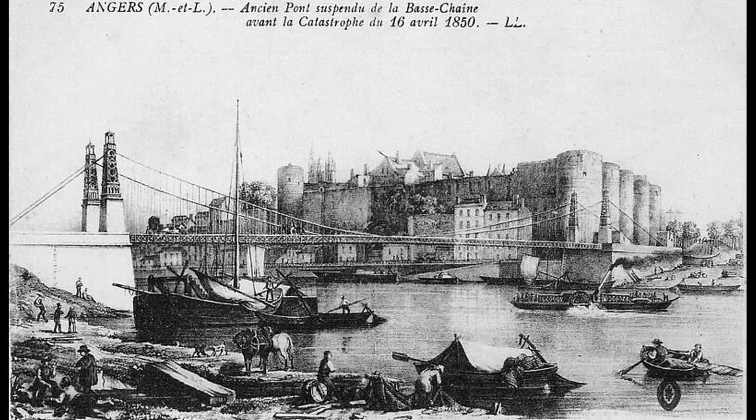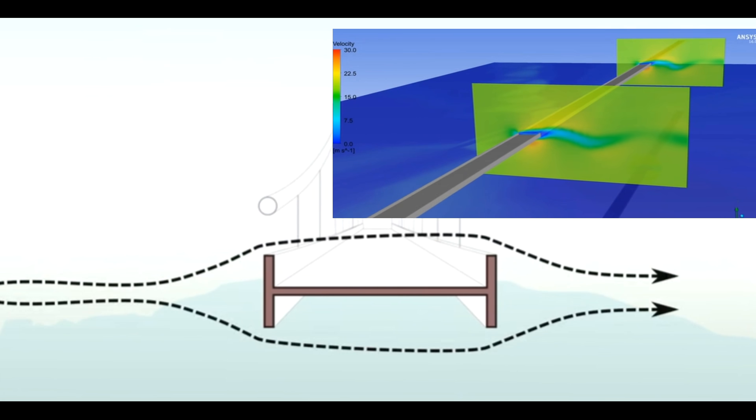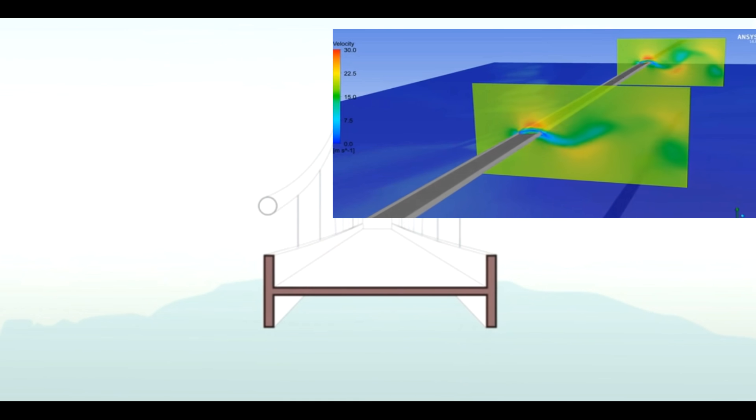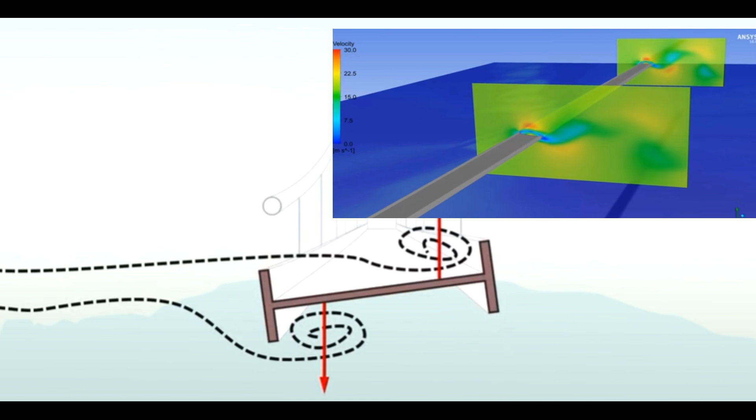The other bridges collapsed due to many factors other than resonance. For example, the Tacoma Bridge collapsed mainly because of aeroelastic flutter, which is an unstable self-excited structural oscillation at a definite frequency where energy is extracted from the airstream by the motion of the structure.